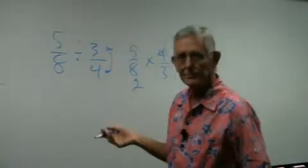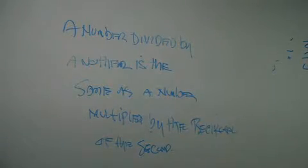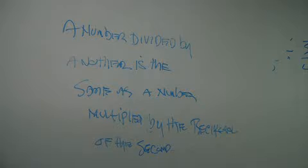Now, why do we do that? Well, there's a very good reason for it. A number divided by another number, basically, is the same as a number multiplied by the reciprocal of the second number, okay? So what I mean is this. Take a whole number.